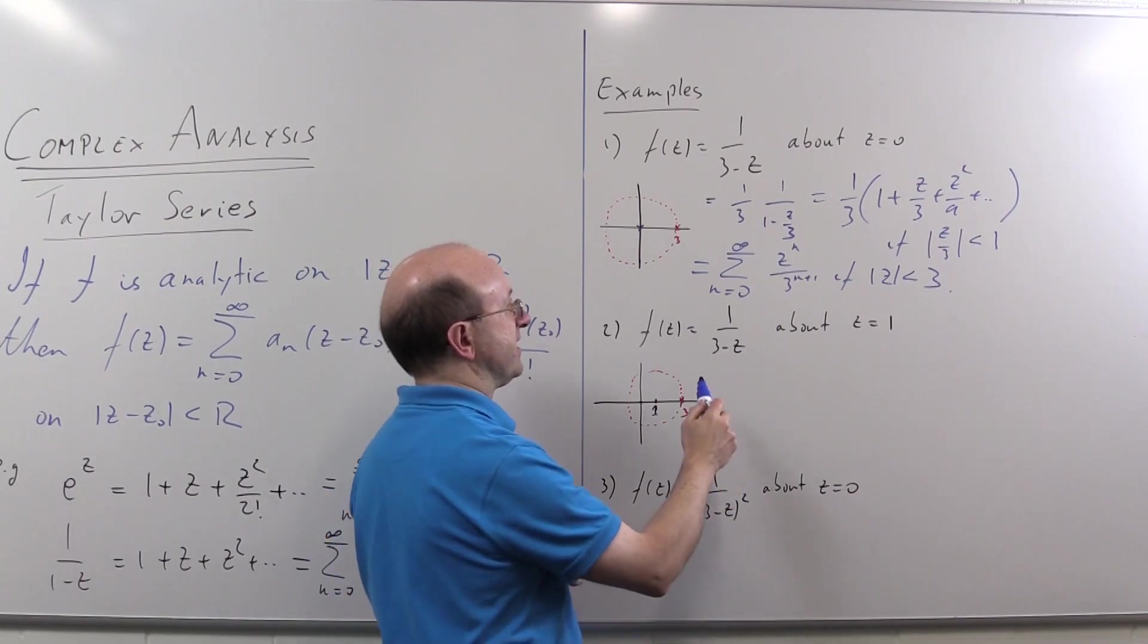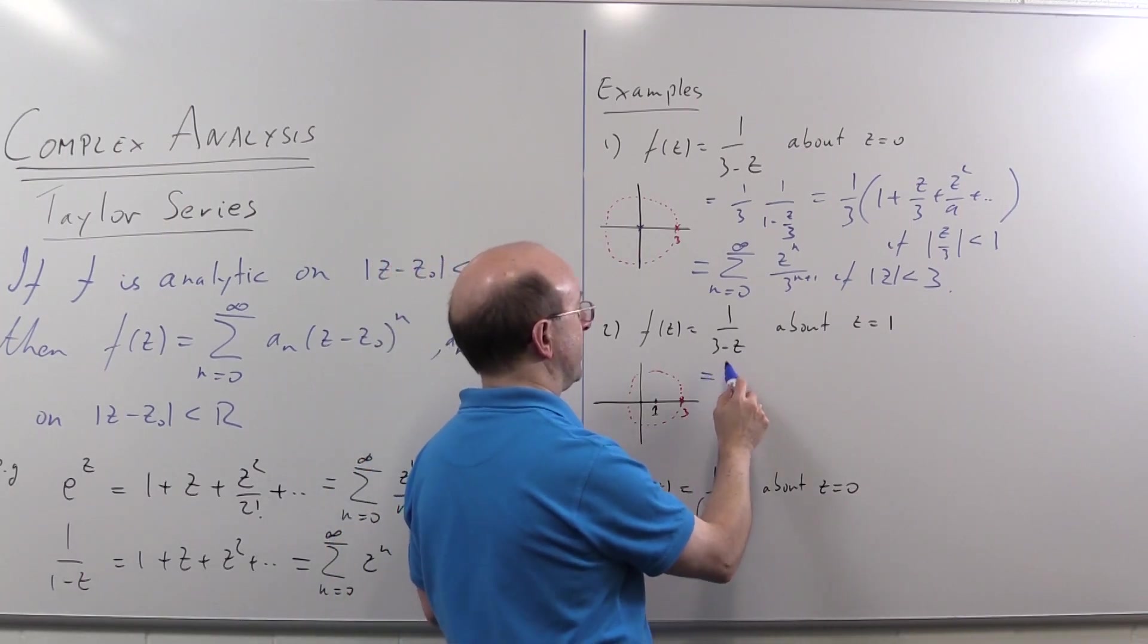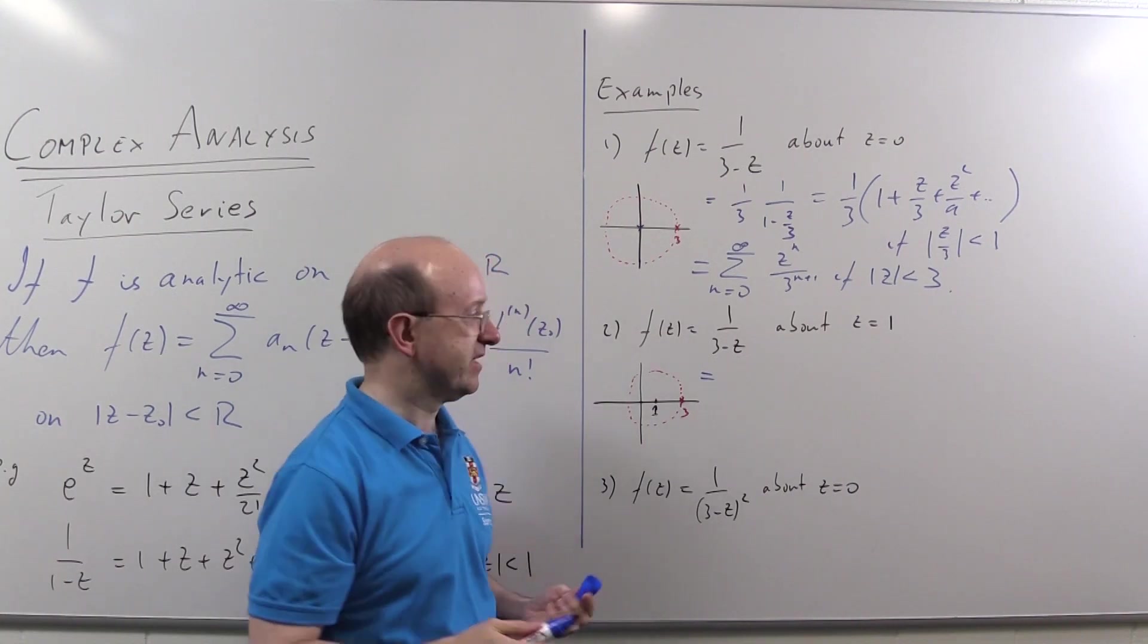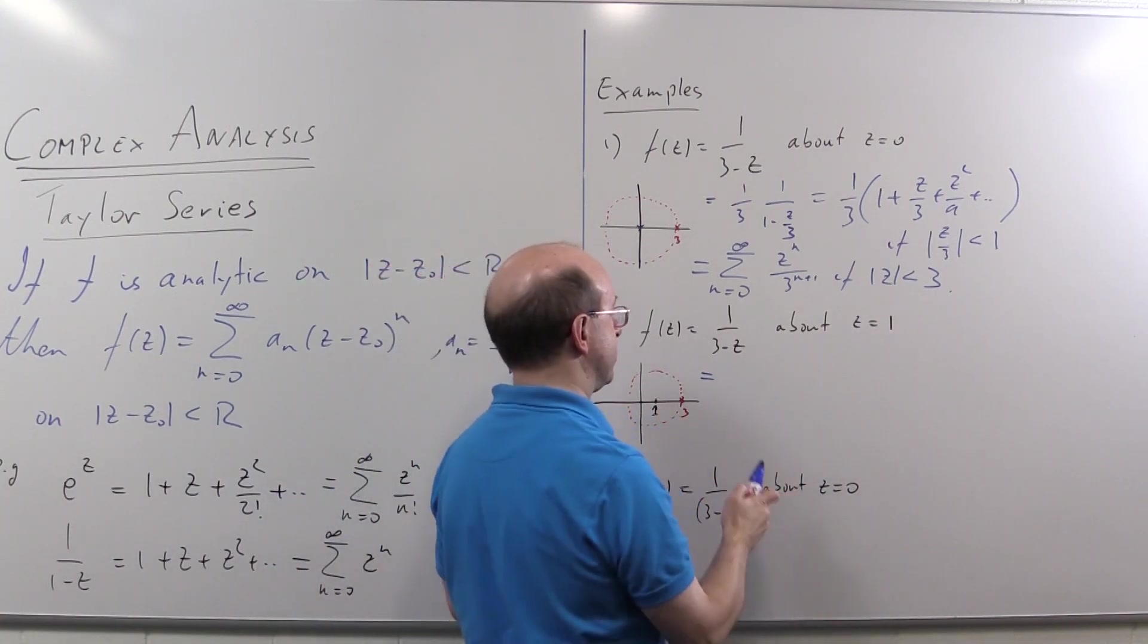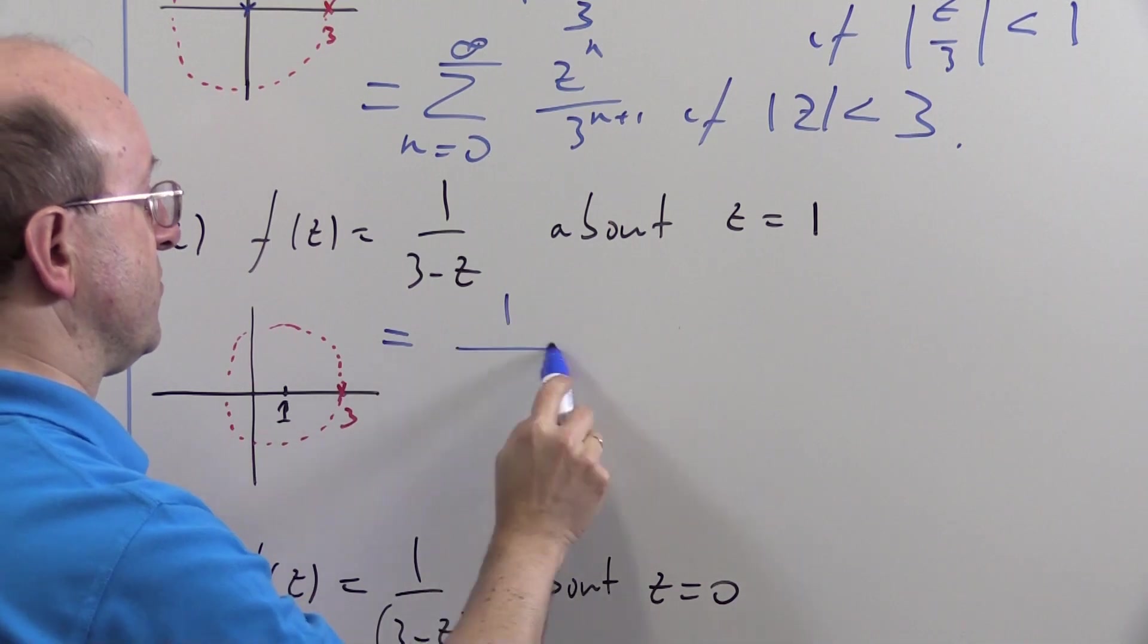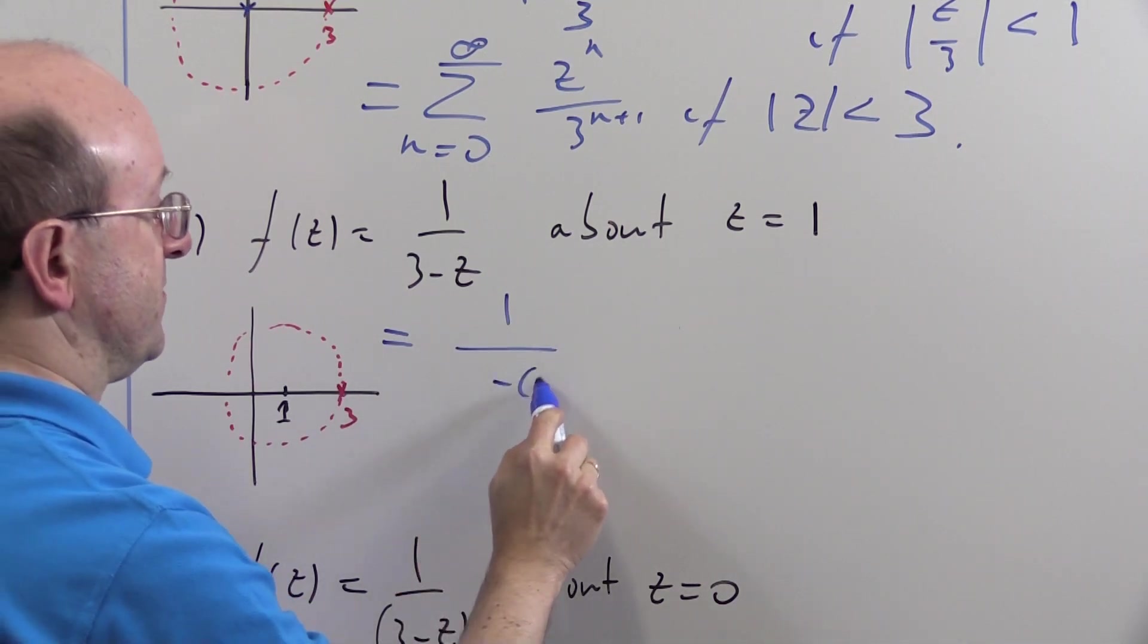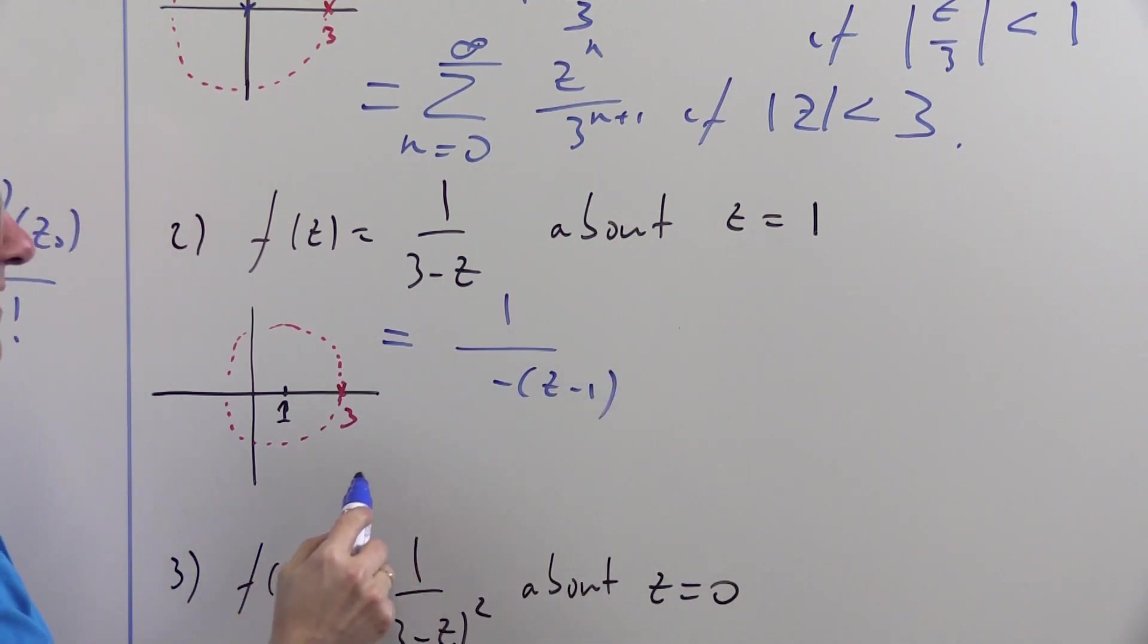So in this case, we have to do a little bit of extra algebra. We're going to rewrite three minus z so it looks like something in terms of z minus one, because that's the point of expansion. So we rewrite that as one over... Well, we want a z minus one in here. So this should have to be a two.